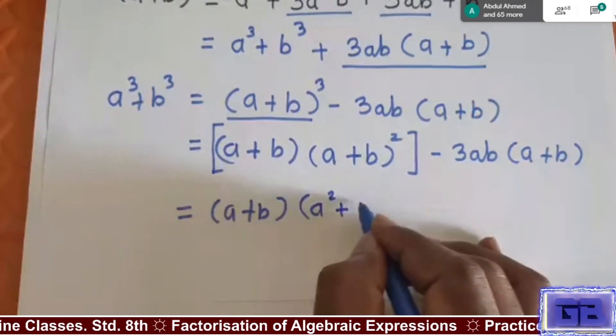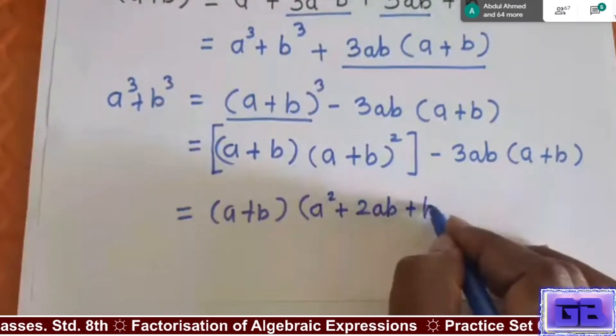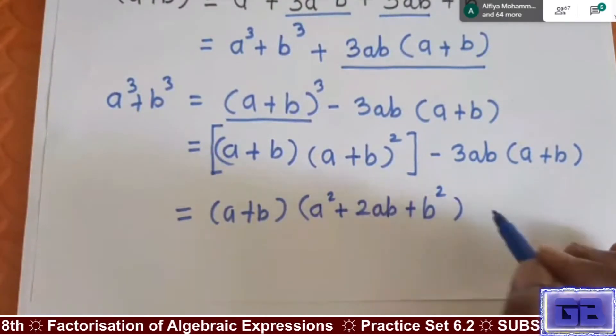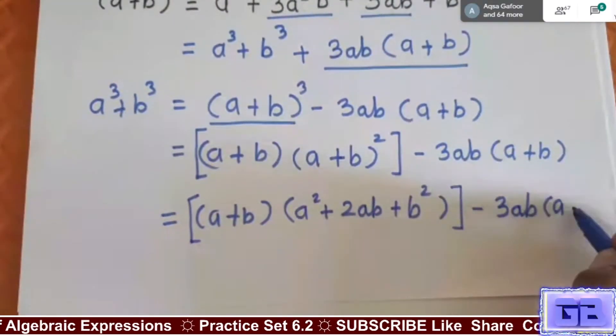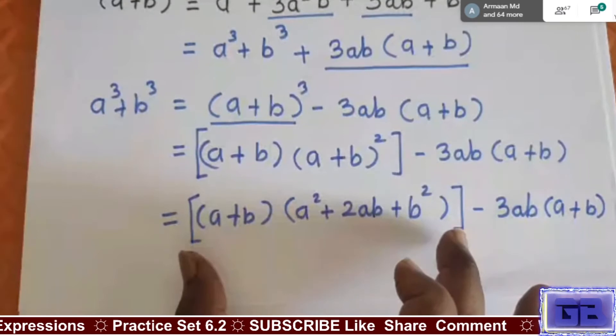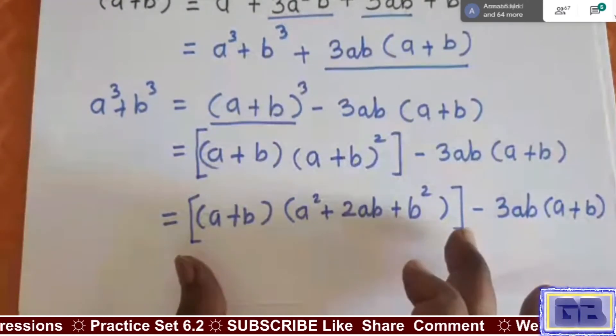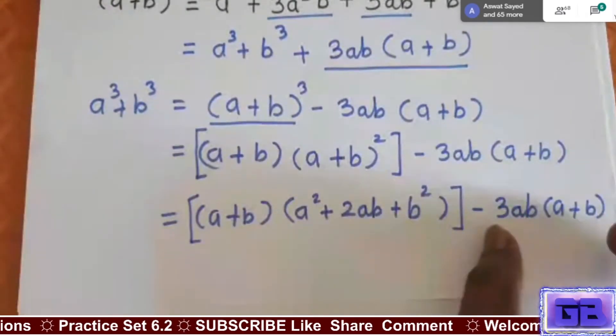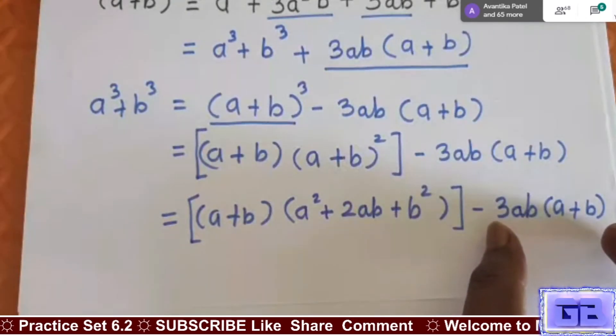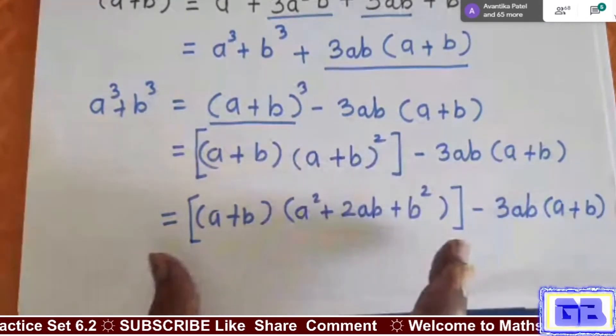a² + 2ab + b², correct. Close this bracket. Again, this term as it is. This bracket we have to consider it is one term and after minus sign this term as another term.